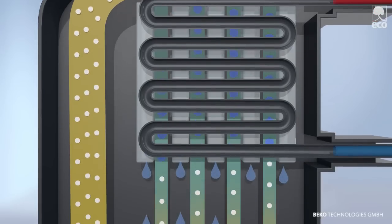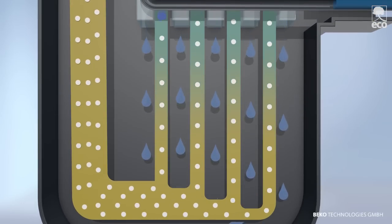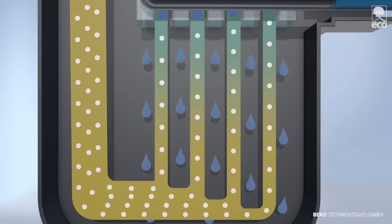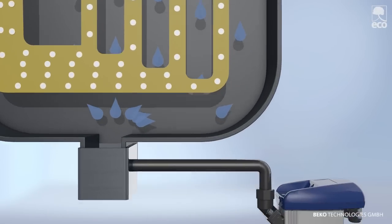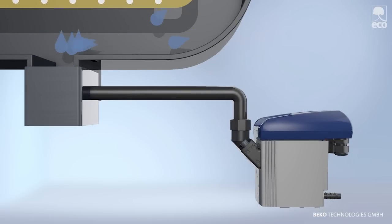The ideally dimensioned demister removes 99% of the water droplets. The condensate then simply flows into the integrated Baecomat condensate drain, all without the loss of compressed air.